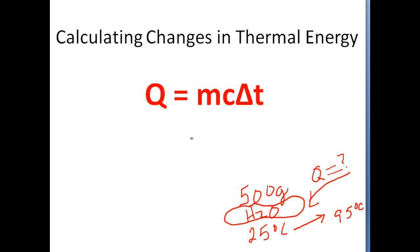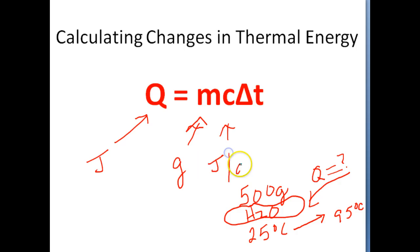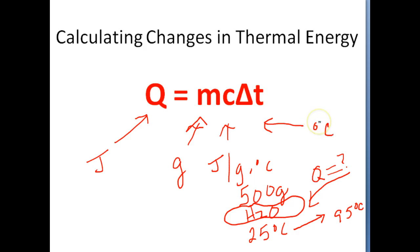For purposes of the examples we're about to give, we need to make sure that when dealing with Q the units are in joules, when working with mass the unit is in grams, when working with specific heat the unit is in joules over grams times degrees Celsius, and when working with temperature it's always in degrees Celsius. So let's work a couple of examples.